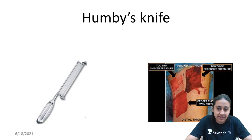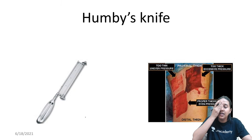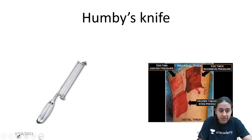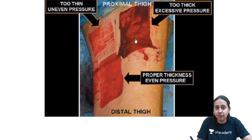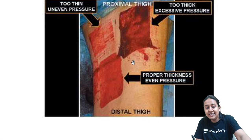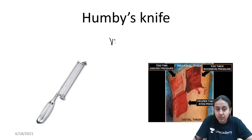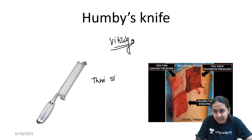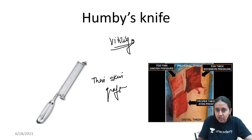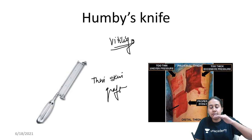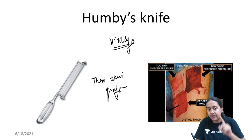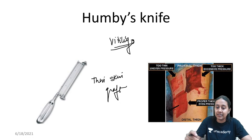Next is Humby's knife, used for thin skin grafting in patients of vitiligo. It takes a thin skin graft. The proper graft thickness is important — not too thin and not too thick. You take the graft only up till the point of pinpoint bleeding using Humby's knife.